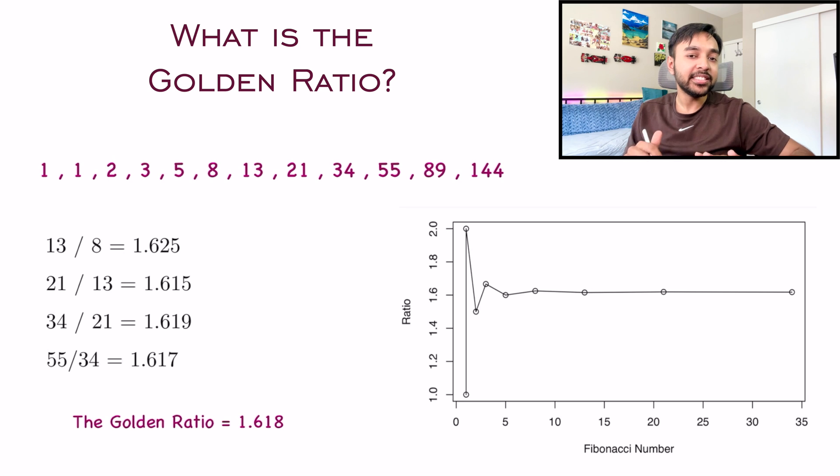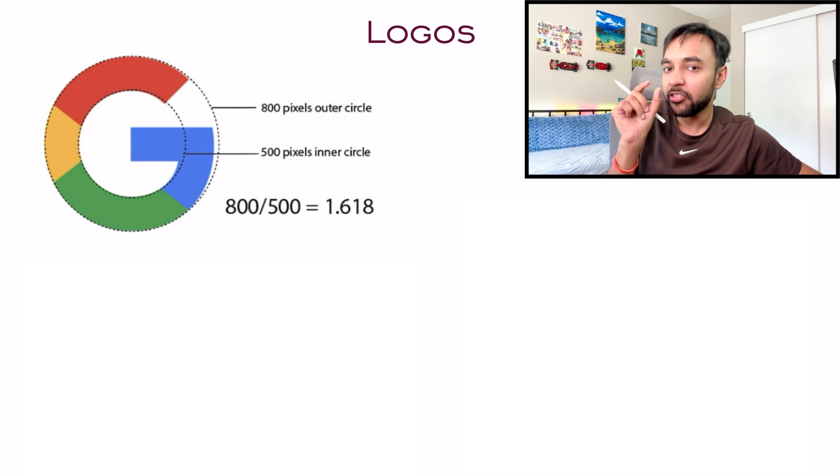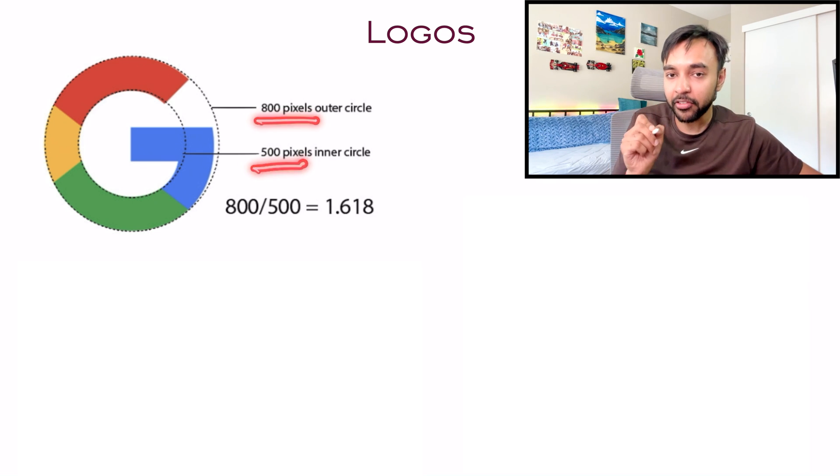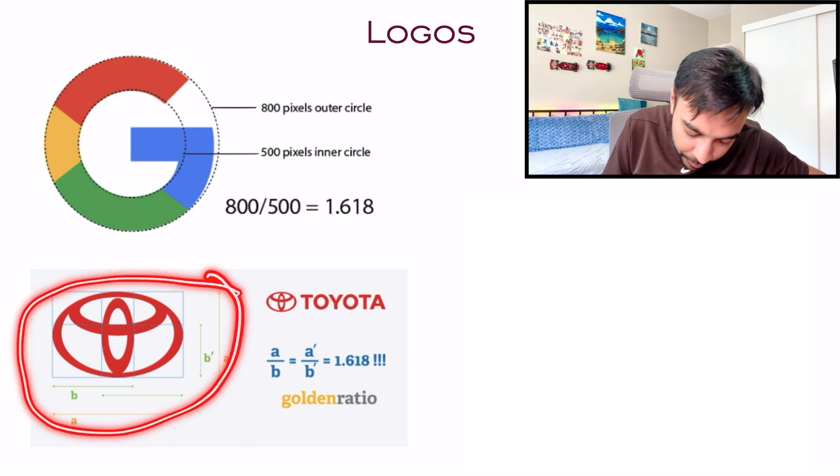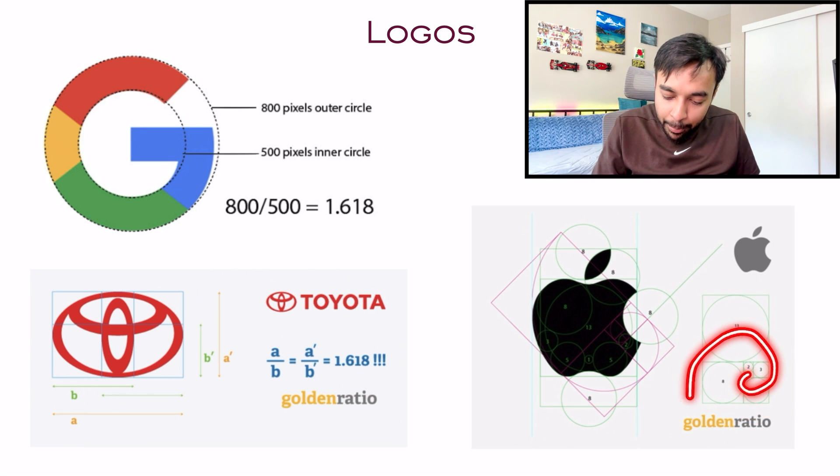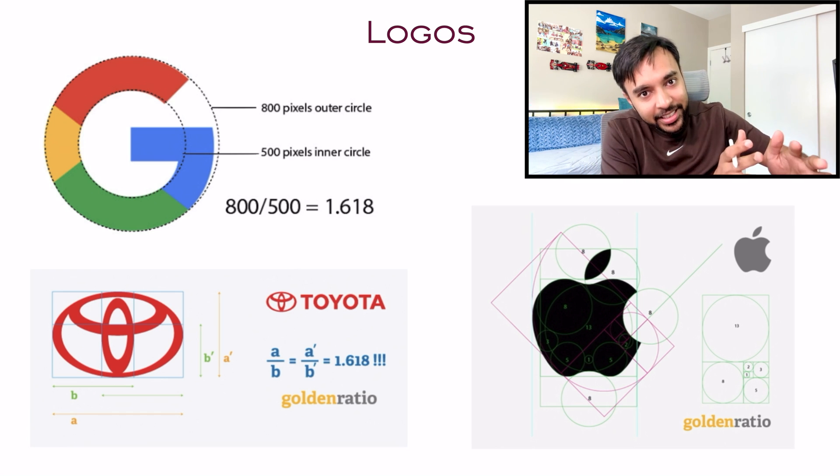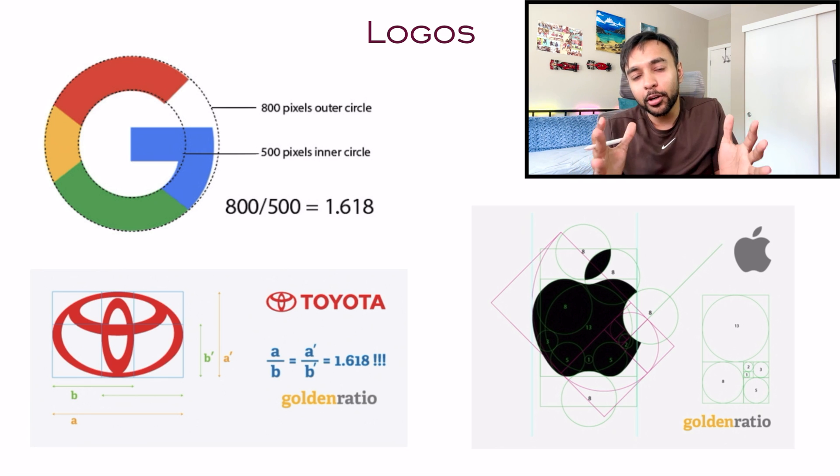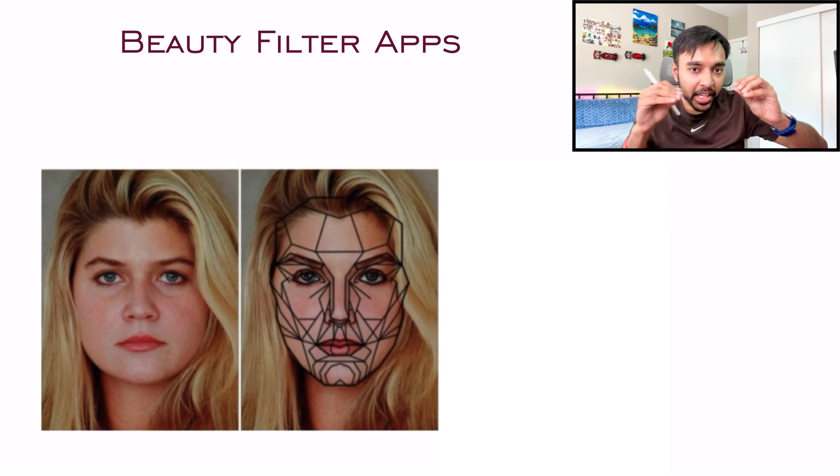That's why this golden ratio is very important. You might not realize, but it's been used in many places to make things look appealing. When you look at the Google logo, it seems like two circles, but they have different radii. The outer circle is 800 pixels and the inner is 500 pixels. When you divide them, you get 1.618 - the golden ratio. Take the Toyota logo - look at all these values, divide them, and you get the golden ratio. Take the Apple logo - you see this pattern, once again the same pattern we discussed. You're using Fibonacci sequences everywhere in logos. This is why some logos feel very appealing and others don't look as attractive.